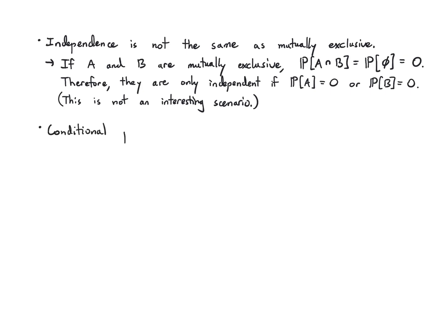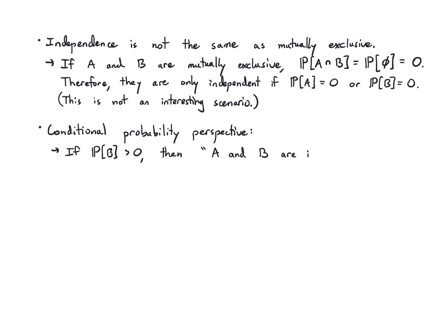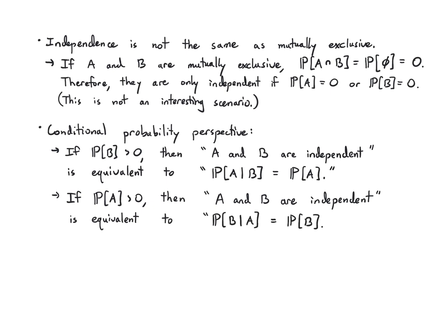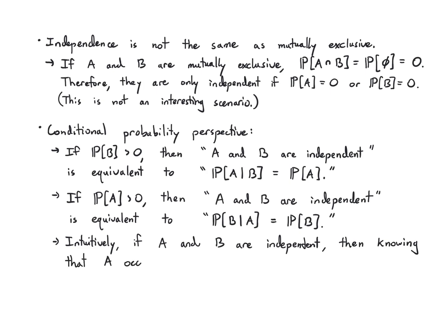Thinking about conditional probability lets us build up some intuition. Assuming B has positive probability, the statement that A and B are independent is equivalent to P(A|B) = P(A). Similarly, if P(A) > 0, independence is equivalent to P(B|A) = P(B). Intuitively, if A and B are independent, knowing that A occurs does not help us predict whether B occurs, and vice versa. Independence means: does knowledge of one event help you determine anything about the other?